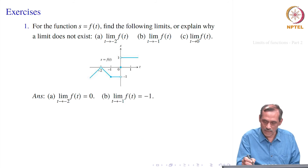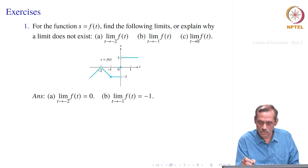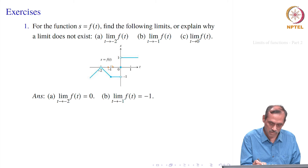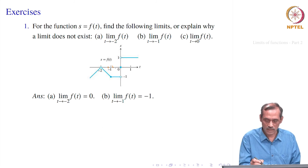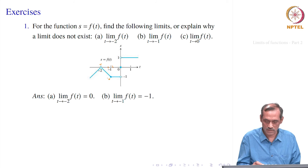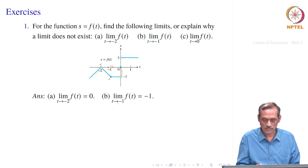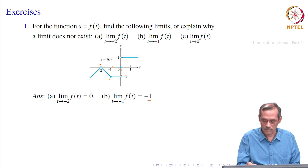For part b, we are asking limit of f(t) as t goes to minus 1. Taking a neighborhood around minus 1, on the left side it is a straight line joining minus 2, 0 and minus 1, minus 1. When t is remaining near minus 1, y is remaining near minus 1 on the left side. And on the other side, y equals minus 1 as well. So the limit should be minus 1.